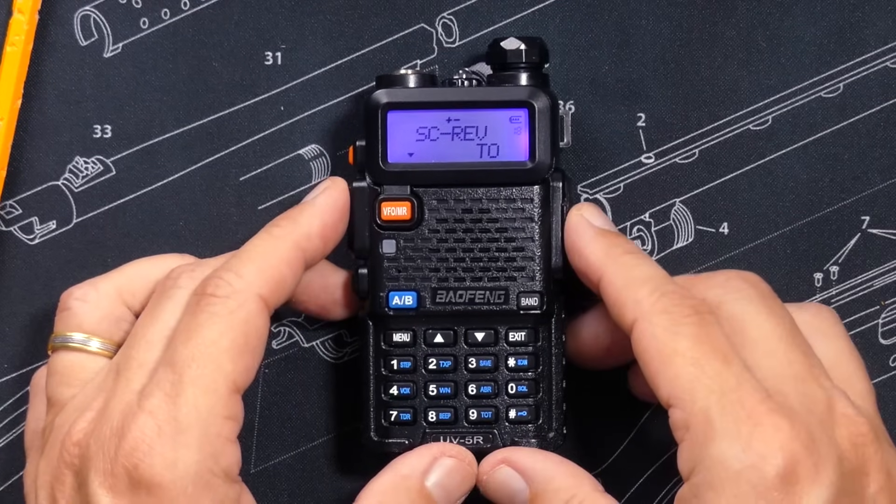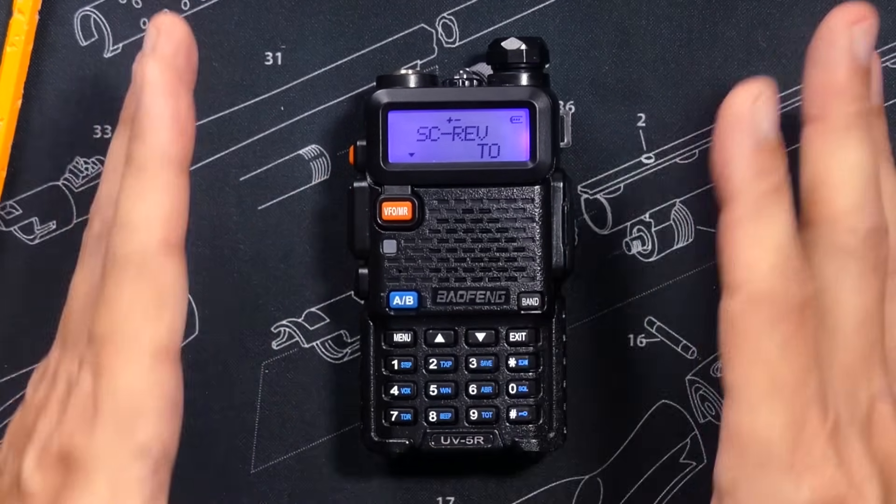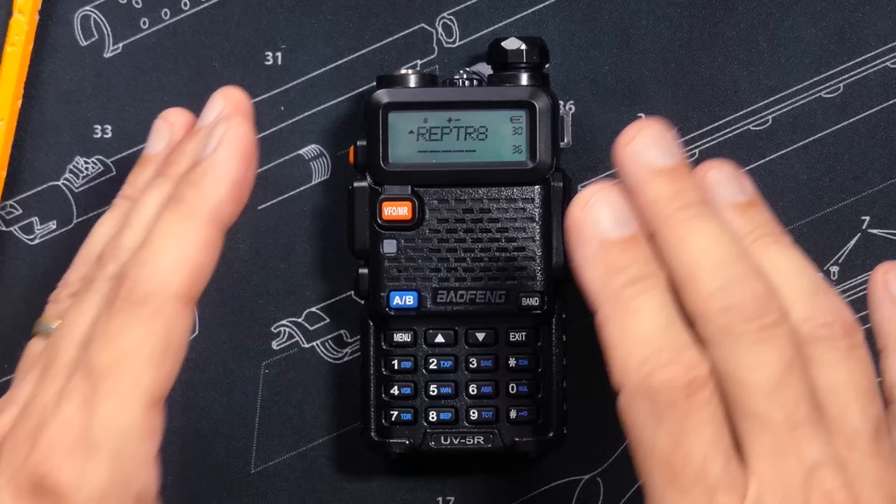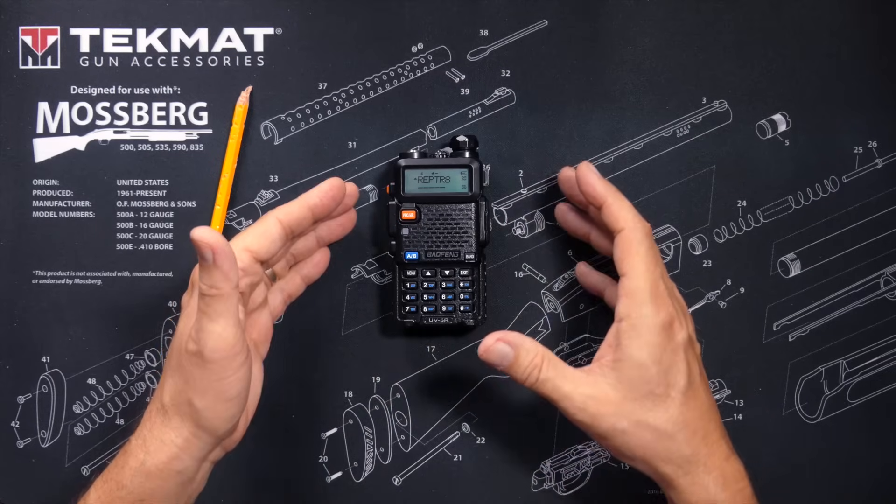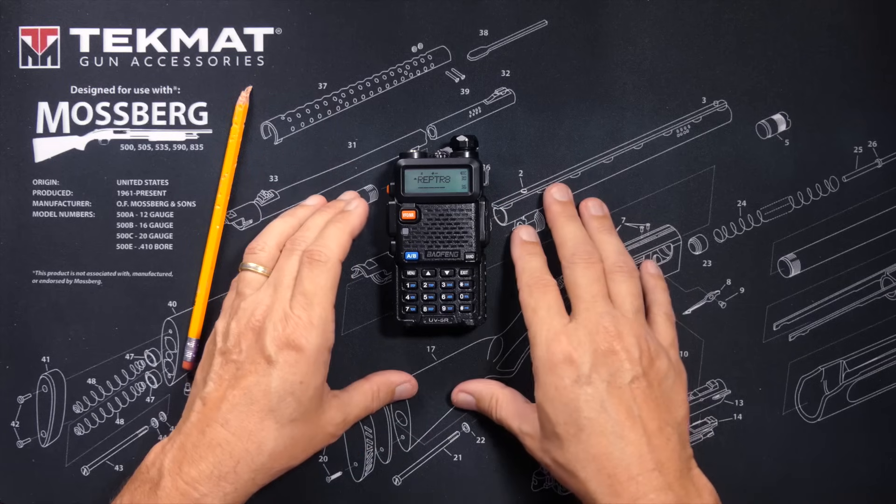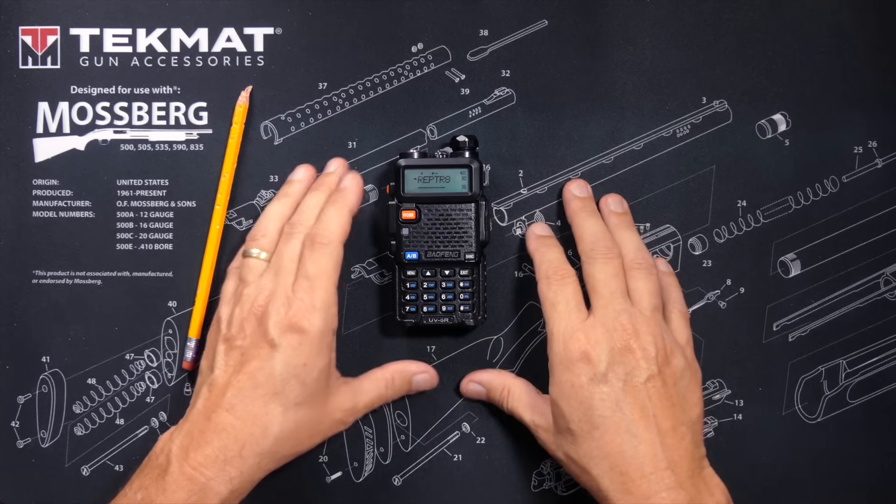TO stands for timeout. If you set this option, when the radio hears a signal, it will pause scanning. It will then listen for several seconds and then resume scanning. It will resume scanning even if that signal is still there, just starting again after about 10 seconds. And you cannot change or adjust that 10-second hold time.